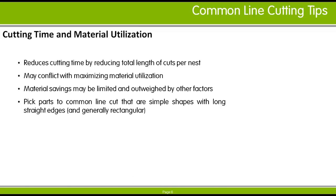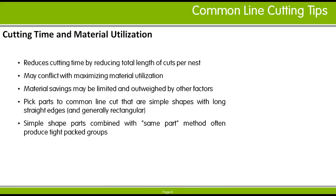It is recommended that you select Common Line Cutting for those parts that will benefit from it the most. Some parts will not be able to produce very much Common Line Cutting because their shapes are just not suitable. If you instruct the nester to nest such parts with Common Line Cutting, the nest's material utilization might be seriously reduced while only reducing cutting time by a small amount. Common Line Cutting is most effective with parts that have simple shapes with long straight edges such as squares, rectangles, or similar shapes. Nesting such parts with the same part method will often produce tightly packed groups with a large amount of Common Cutting, and the Common Cuts created when Auto Tooling is applied tend to be simplest in form when parts have that kind of shape.